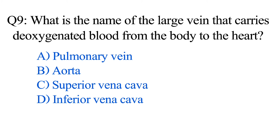Question number nine. What is the name of the large vein that carries deoxygenated blood from the body to the heart? Option A: Pulmonary vein. B: Aorta. C: Superior vena cava. D: Inferior vena cava. The correct option is Option D: Inferior vena cava.